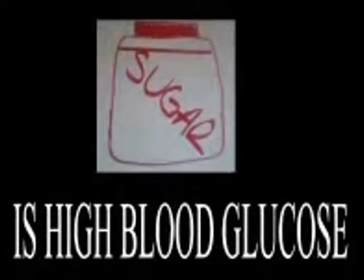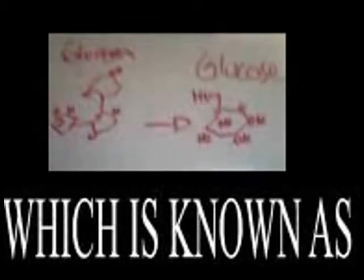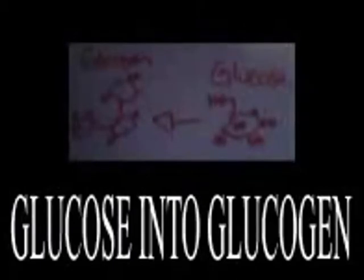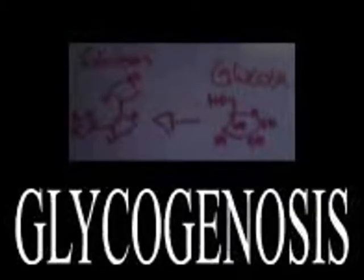Alpha cells also convert glycogen into glucose, which is known as glycogenolysis. Beta cells convert glucose into glycogen, also called glycogenolysis. This occurs in the liver.